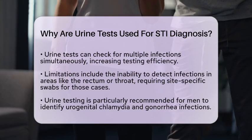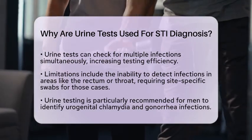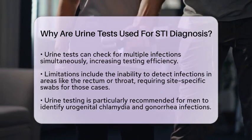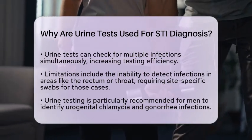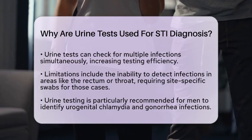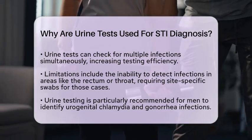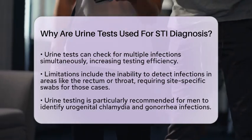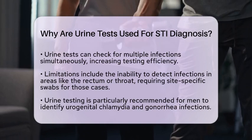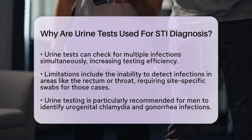However, it is essential to note that urine tests have limitations. They primarily detect infections in the urinary tract and may miss infections located in other areas, such as the rectum or throat. For these cases, site-specific swabs are necessary for an accurate diagnosis.